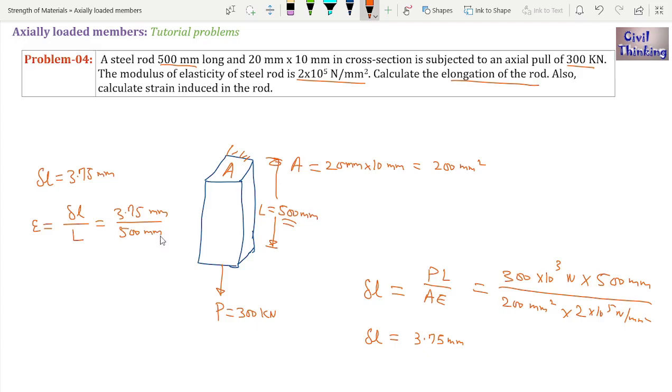Now how much is it? Let me use the calculator. So I get strain to be 7.5 multiplied by 10 to power minus 3. This is the strain and this is the elongation of this axially loaded bar. So I hope you understand.